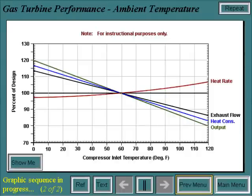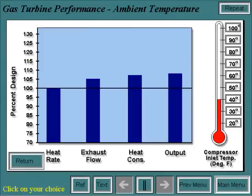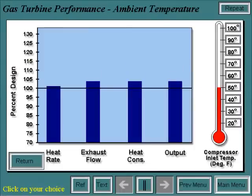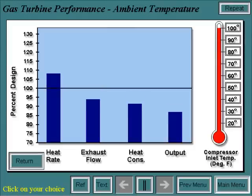Depending on the unit's cycle parameters and component efficiencies, ambient temperature will affect the air mass flow, which in turn will change output, heat consumption, heat rate, and exhaust flow.